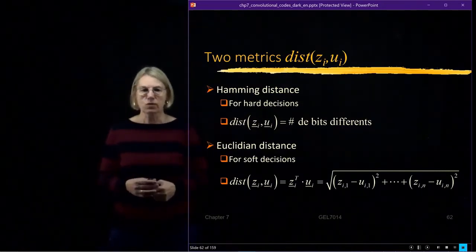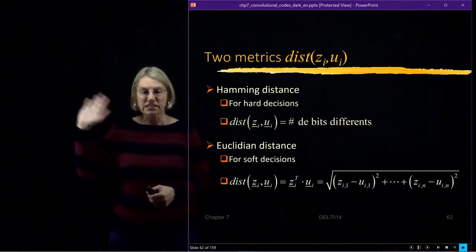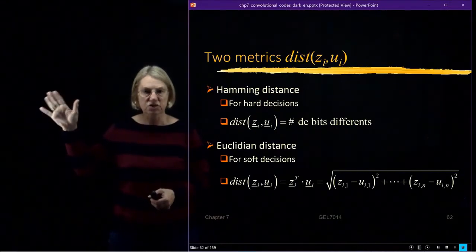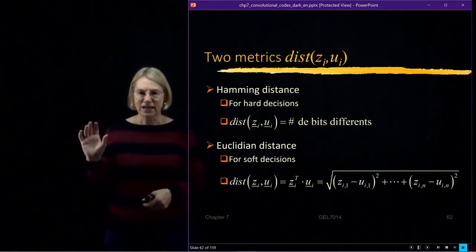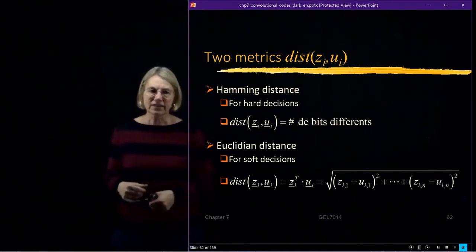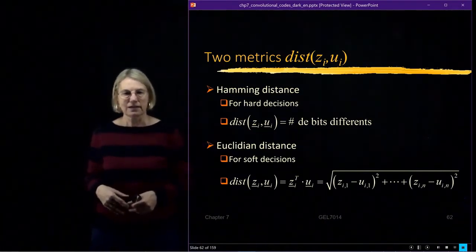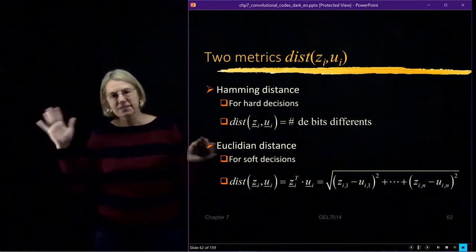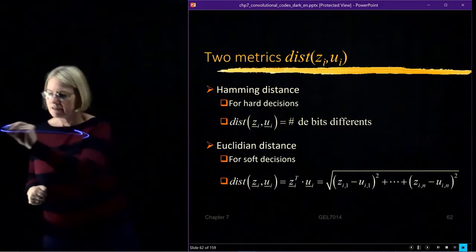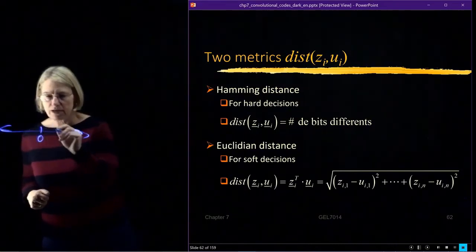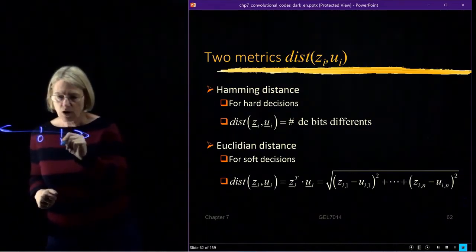Now, Euclidean distance is what I use in the case of continuous decisions. So this is for soft decisions. And now I have a sequence. And you can think of them as like, I would say, IQ coordinates. But let's say we're doing binary. So I have this line. Here's zero.